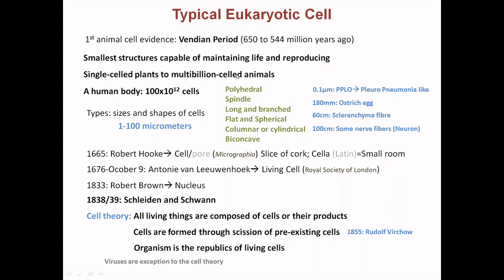Cells have various shapes: polyhedral, spindle, long and branched, flat and spherical, columnar or cylindrical, and biconcave. The term 'cell' was coined by Robert Hooke in 1665. He designed a new compound microscope in which he visualized a slice of cork. From the Latin word 'cella' meaning small room, he called these structures 'cells.' These findings were published in Micrographia.